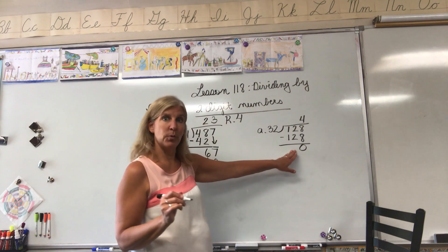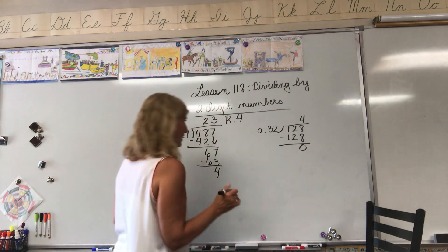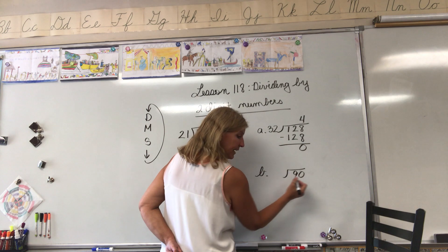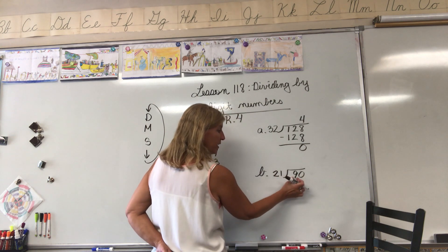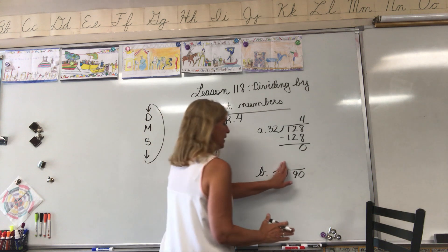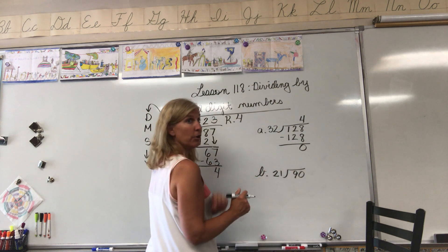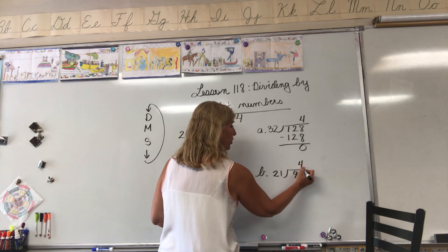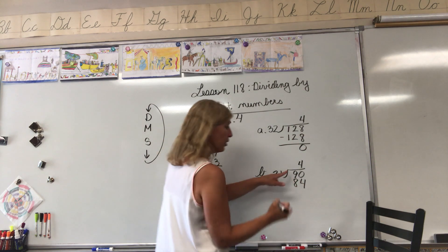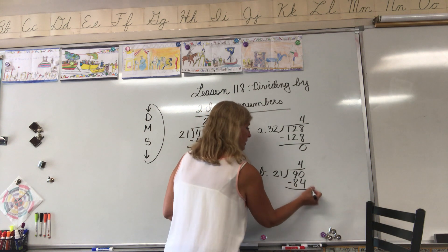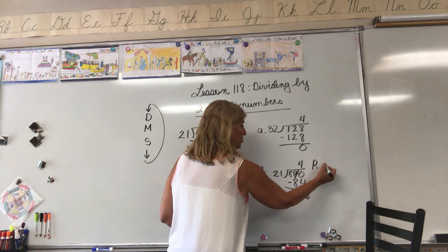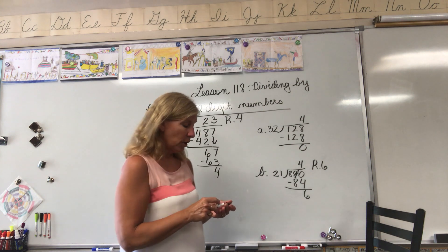Oh look at that, the numbers are the same. We have no remainder. Our answer is 4. That was simple. Let's try B. 90 divided by 21. Does 21 go into 9? Nope, 21 is bigger than 9. So 21 is going to go into 90. Think how many 2s are in 9? There are 4. Let's start with 4. 4 times 1 equals 4, 4 times 2 equals 8. Is 84 larger than 90? Nope, we're good. Subtract 0 minus 4, regroup, 10 minus 4 is 6. We have a remainder of 6.